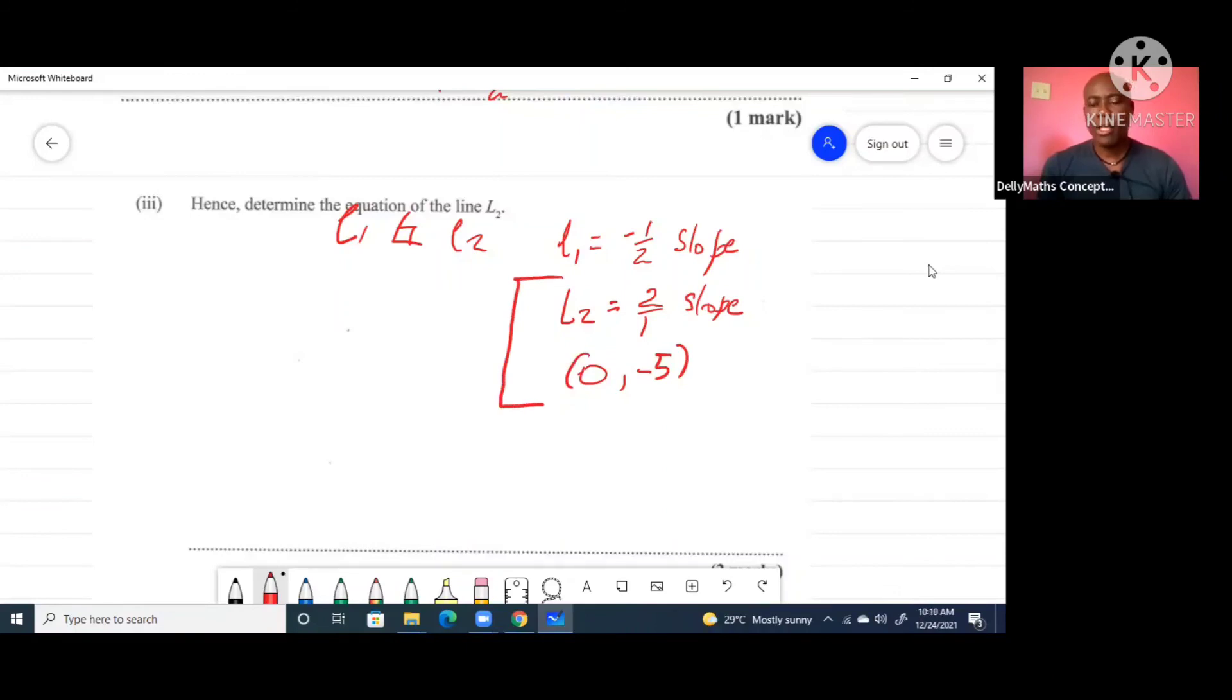The thing is though, this is finished because if I have a zero as my coordinate that means I'm on the y axis. So c is already negative five and m which is the slope is two. Therefore the equation is going to be y equals 2x minus 5. That is simply the equation of line L2.